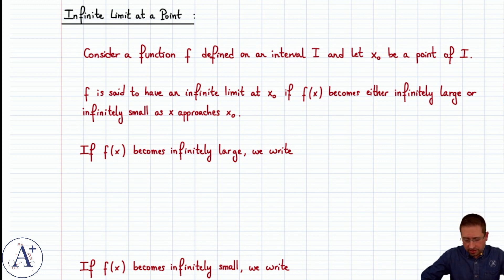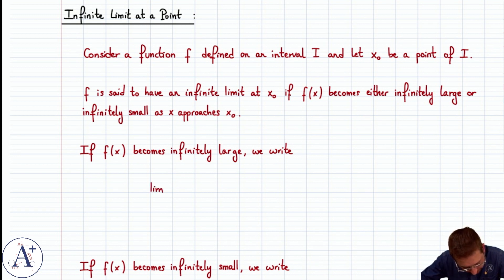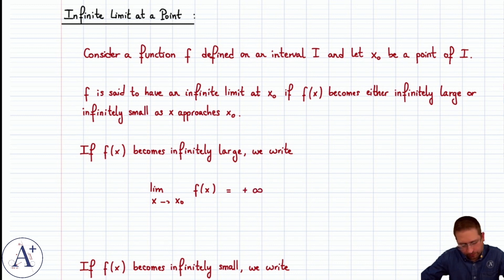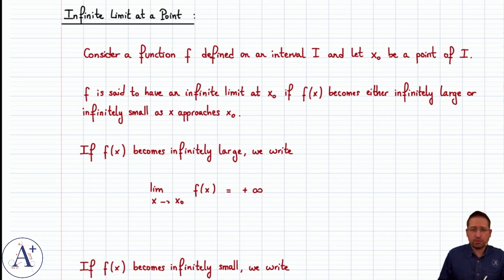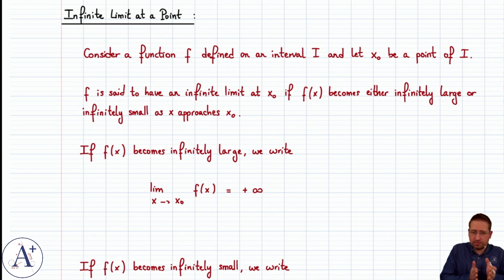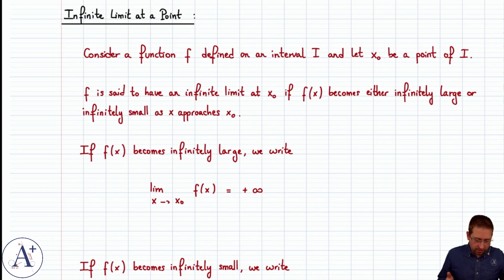We have to distinguish the two. If f of x becomes infinitely large, what we'll write is that the limit as x approaches x0 of f of x is equal to plus infinity, sometimes just infinity. What you're saying is that there is no cap you can put on f of x. You could pick any number, however big you want — f of x will eventually be greater than that number. You'll just have to bring x closer to x0. At some point you can bring x close enough to x0 that f of x exceeds any finite number you can imagine, however large it may be. So we write that the limit of f of x as x approaches x0 is plus infinity.